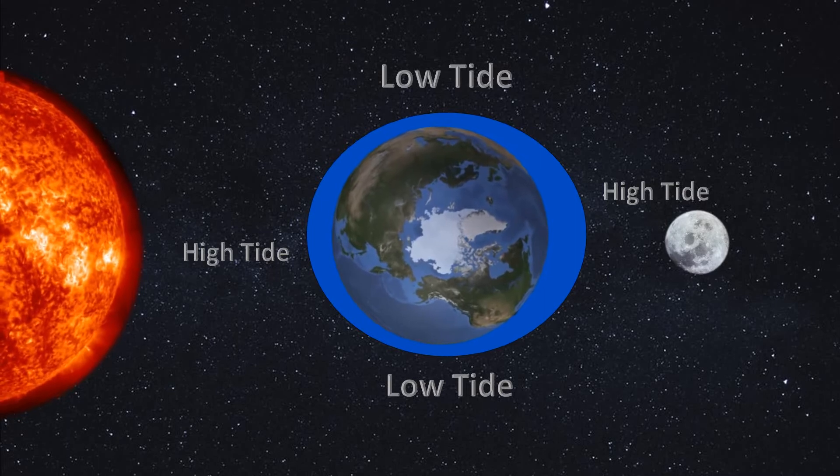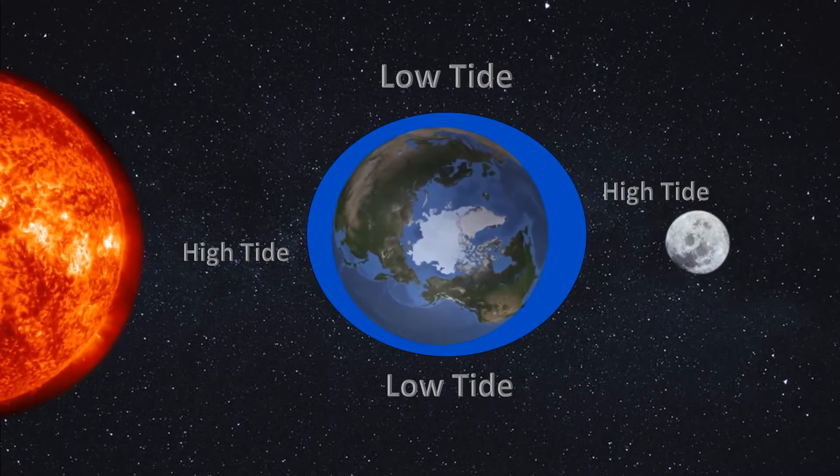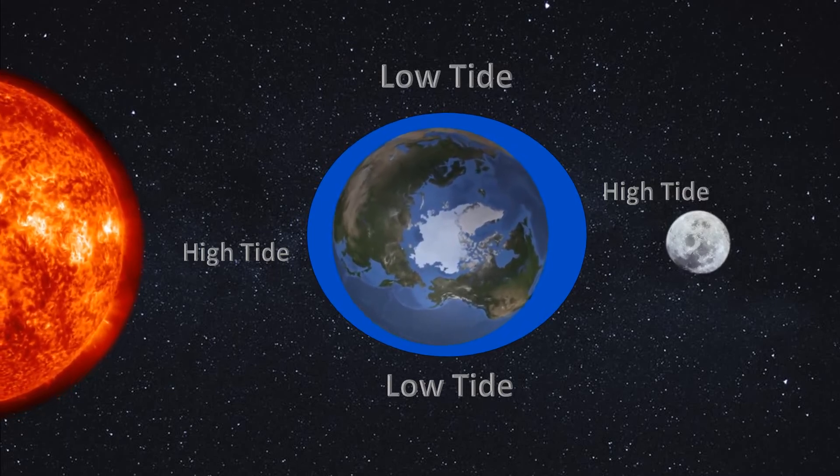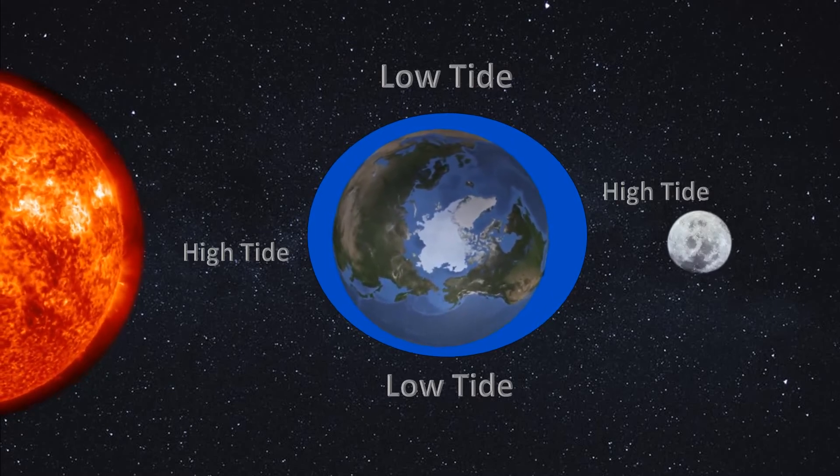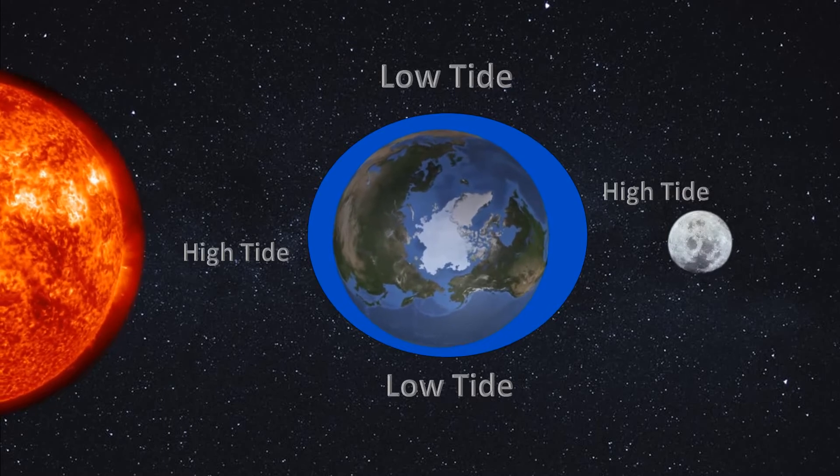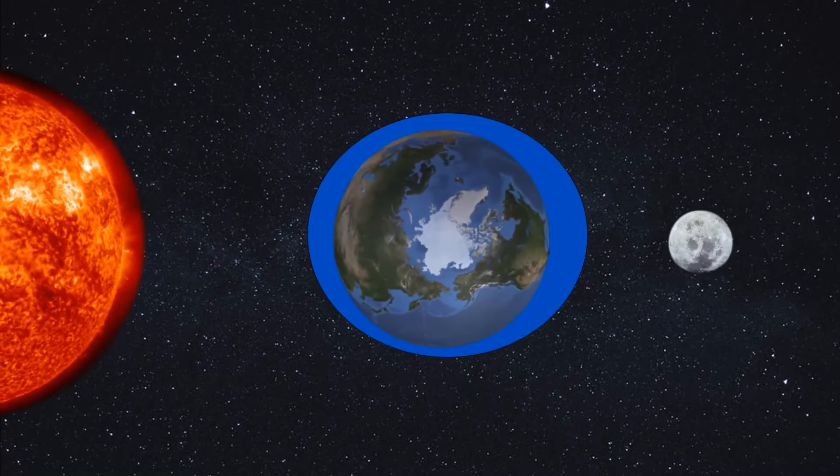Every day we have two high tides and two low tides, one every six hours. The tide caused by the moon is equivalent to approximately from two thirds to three quarters of the total tide while the sun generates the rest.